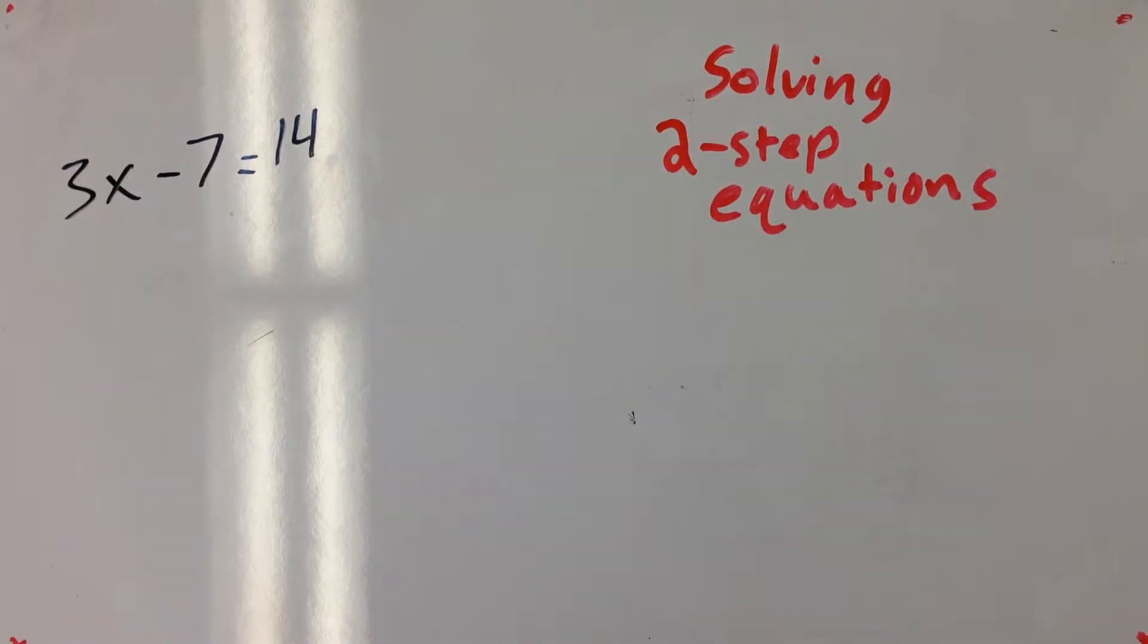In this example, we have a two-step equation to solve, and it's 3x minus 7 equals 14.